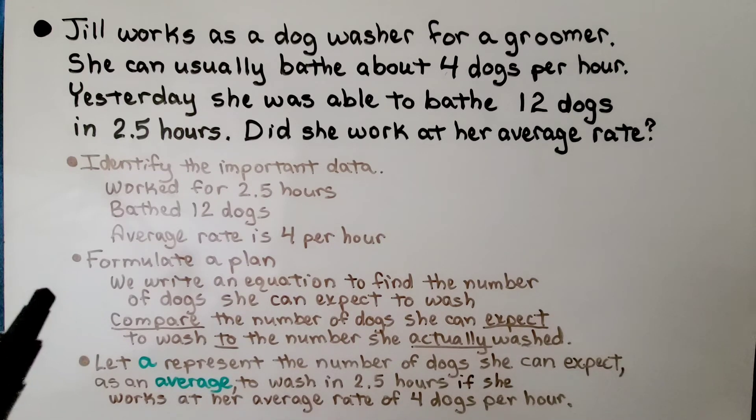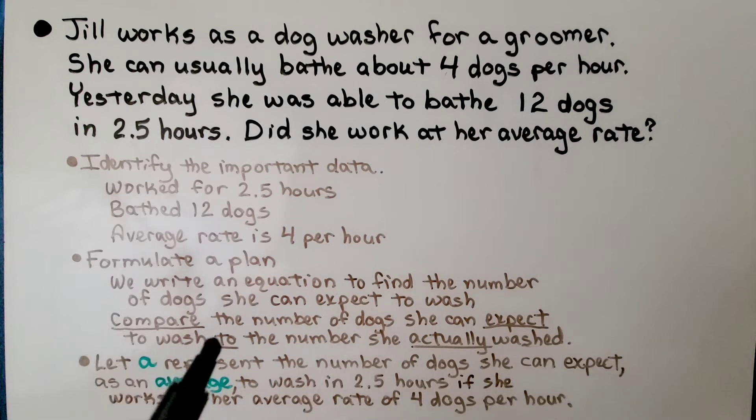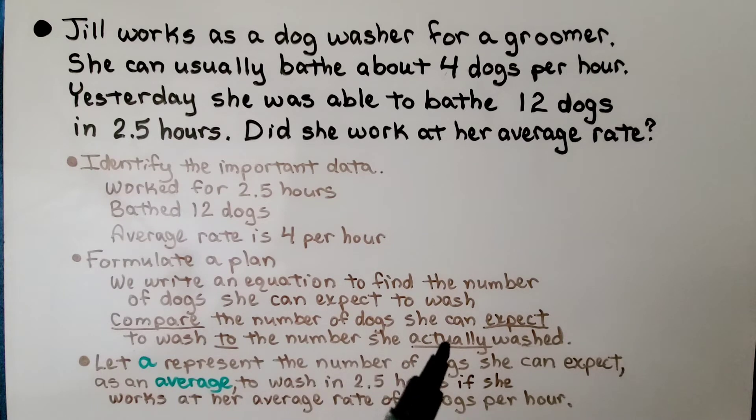We write an equation to find the number of dogs she can expect to wash, and compare that to the number she actually washed. Let A represent the number of dogs she can expect to wash in 2.5 hours if she works at her average rate of 4 dogs per hour.